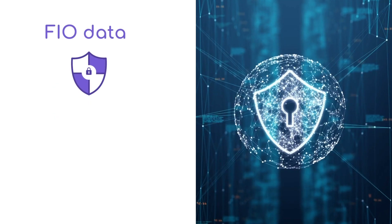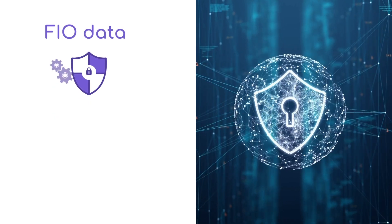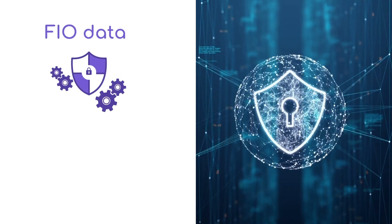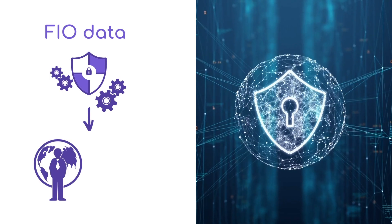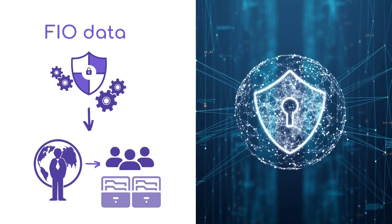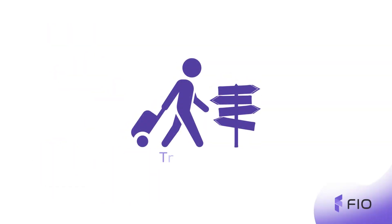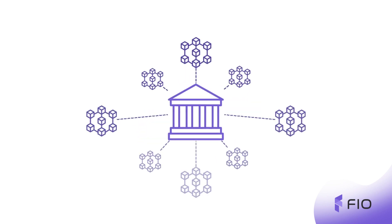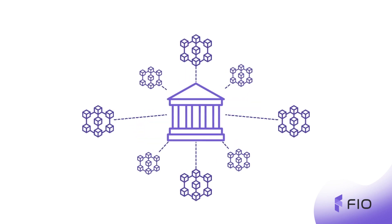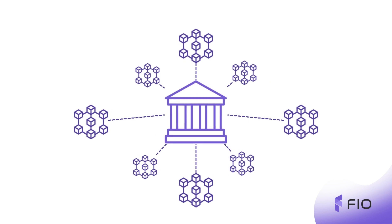Finally, FIO data can also provide a secure and private mechanism for certain regulated entities to maintain encrypted stores of information on customers, as stipulated by examples such as the travel rule. This will allow for a level of cross-application compliance where jurisdiction demands.